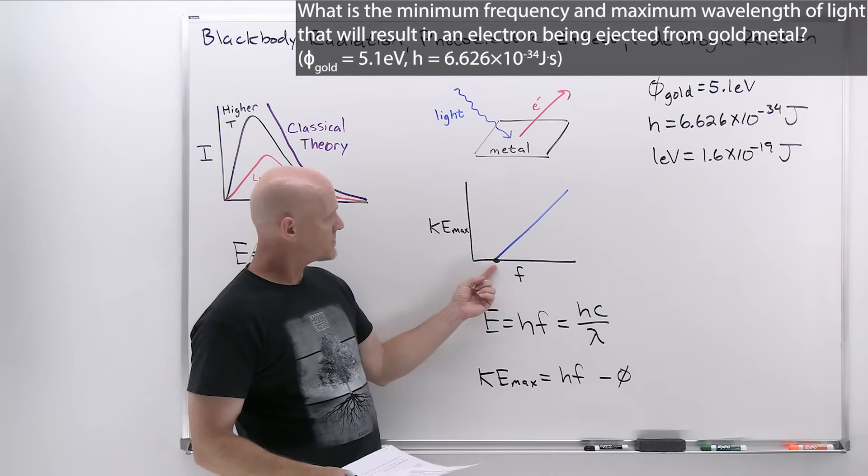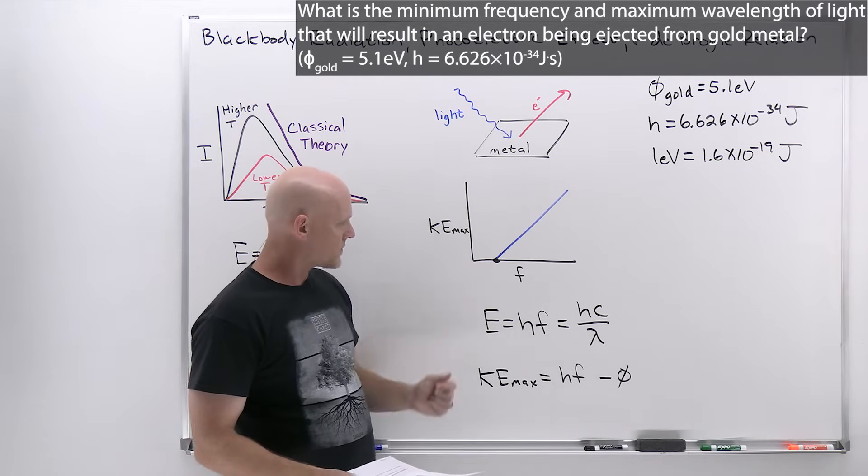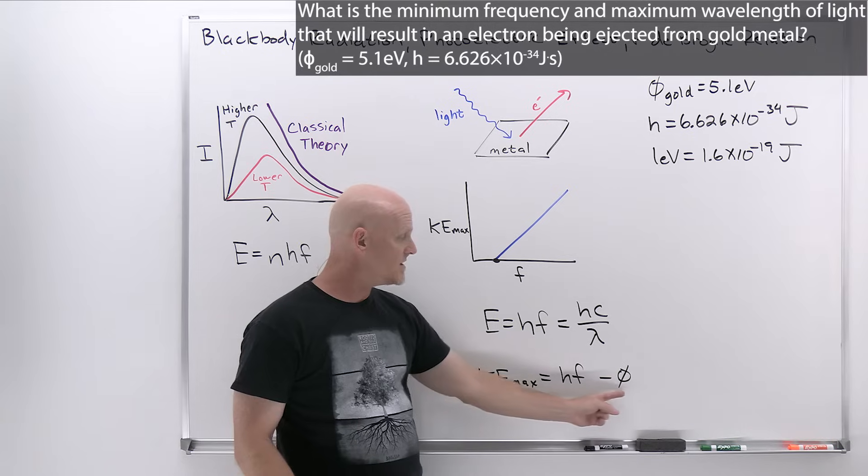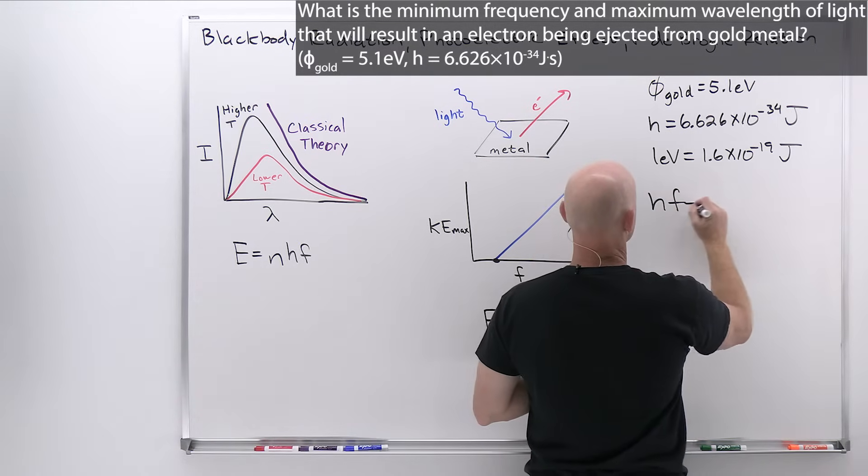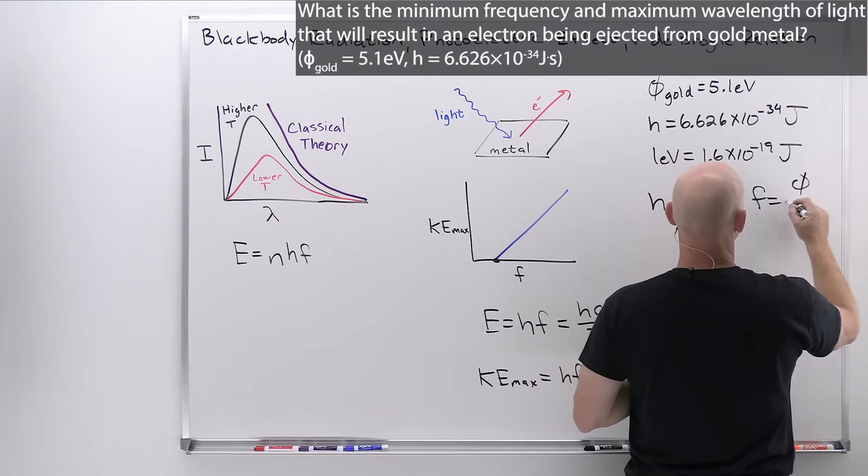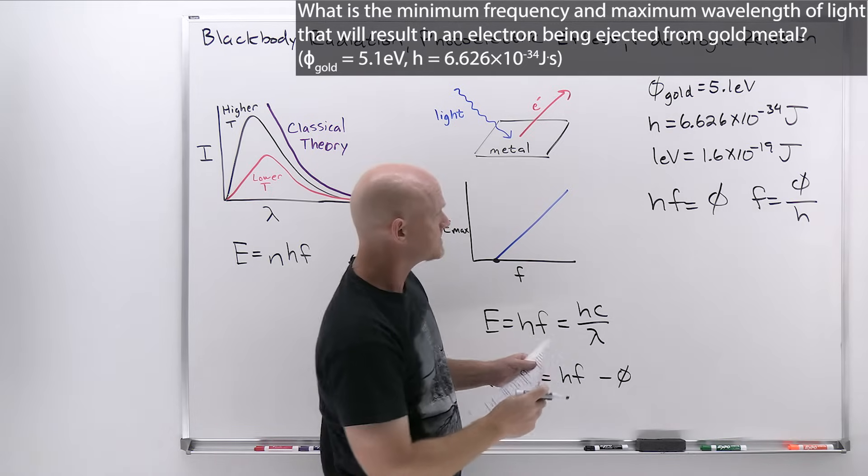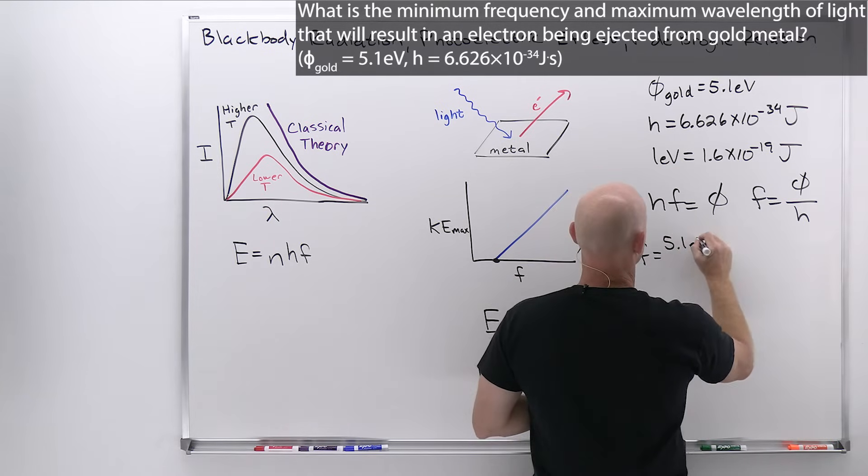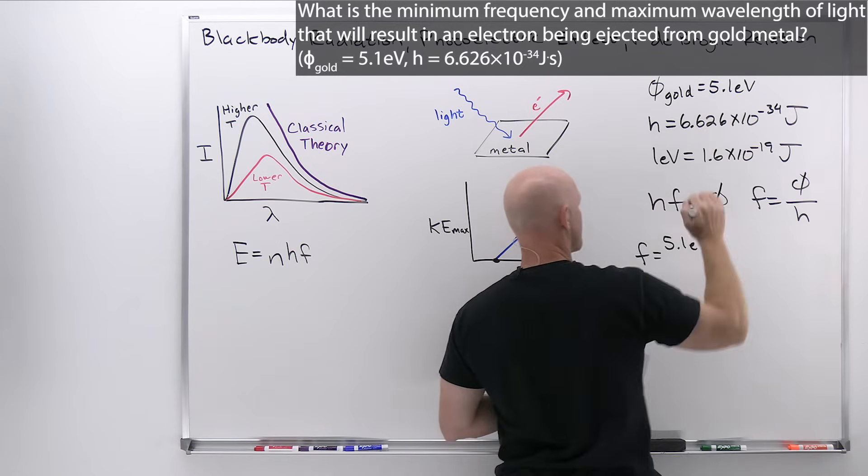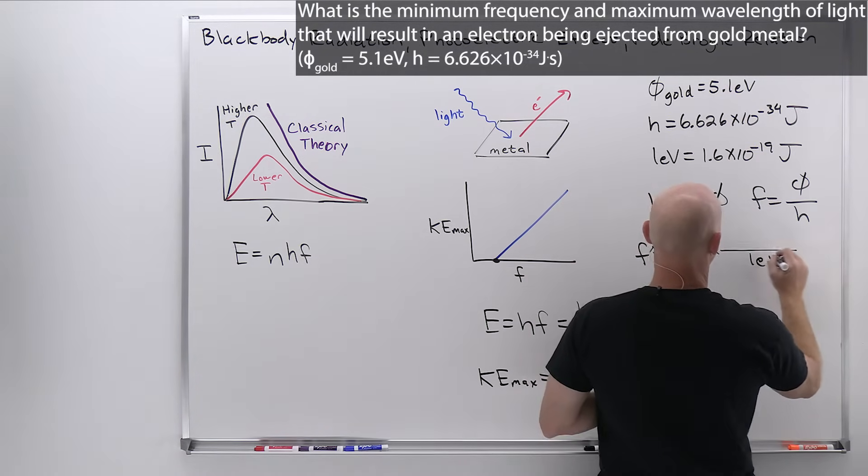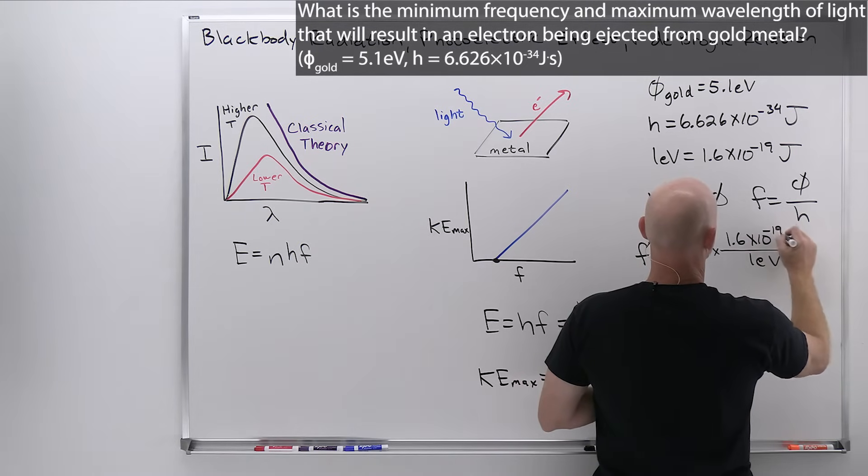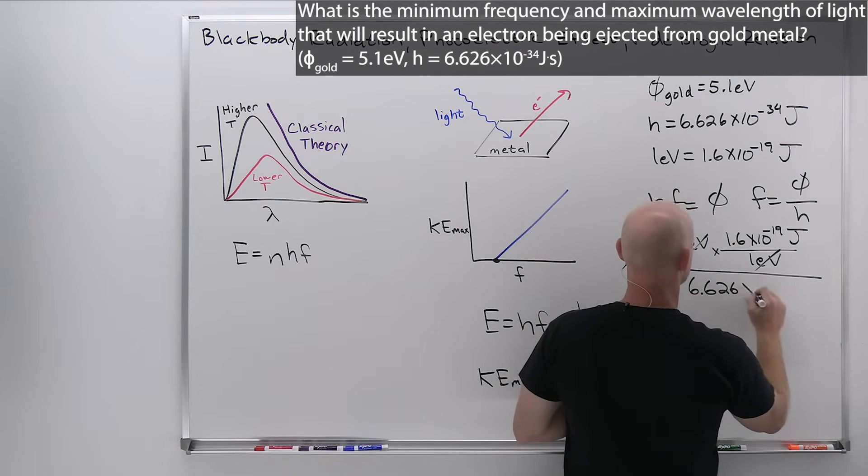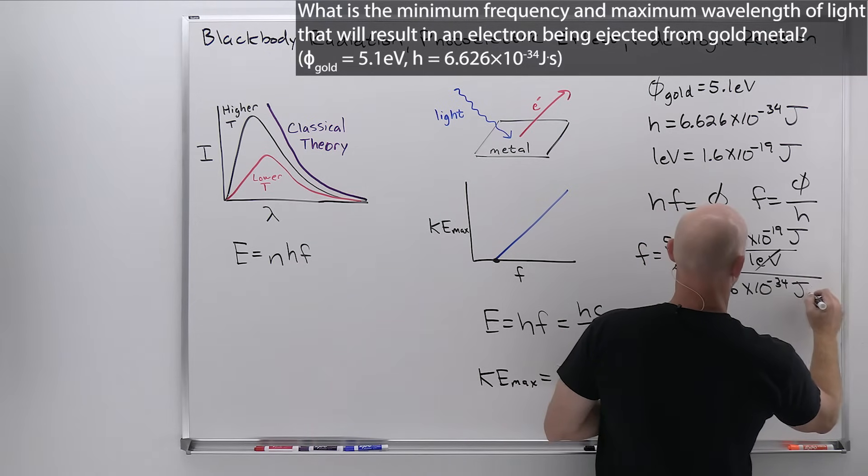It might be helpful if you remember that 1 electron volt is the same as 1.6 times 10 to the negative 19 joules. It is the energy required to accelerate an electron, which has a charge of 1.6 times 10 to the negative 19 coulombs, through a 1 volt potential difference. So from here, if we want that minimum frequency, that threshold frequency, that happens right when kinetic energy equals zero, which occurs right when the energy of the photon hf is equal to the work function. So in this case, we want to set hf equal to that work function so that the frequency is going to equal the work function over Planck's constant.